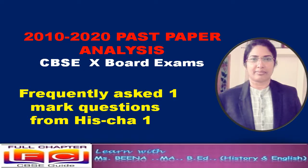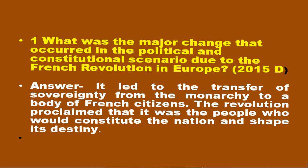It can be either multiple choice questions, fill in the blanks, or very short answer questions. Question number 1: What was the major change that occurred in the political and constitutional scenario due to the French Revolution in Europe? The answer is it led to the transfer of sovereignty from the monarchy to a body of French citizens.